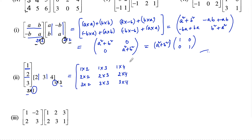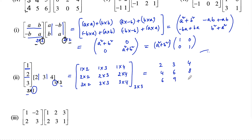So the resulting 3 by 3 matrix is: 2, 3, 4 in the first row; 4, 6, 8 in the second row; and 6, 9, 12 in the third row. This is the matrix of order 3 by 3.